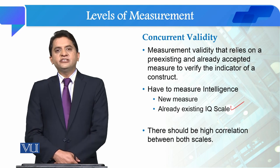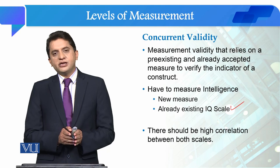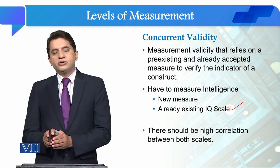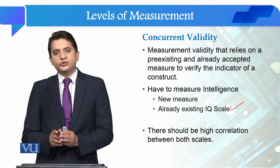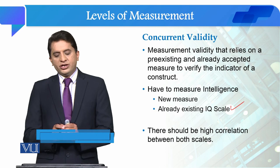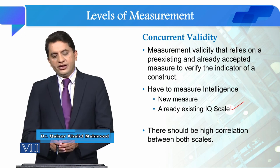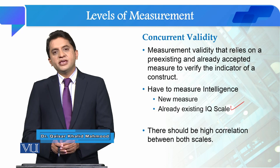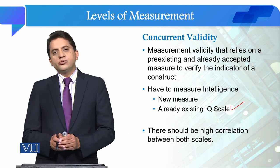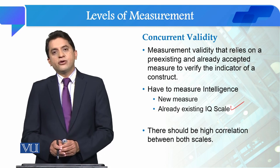How do we check concurrent validity? We look at the new scale and the conventional scale — an already developed traditional scale. We collect data and compare the two scales. If there is a high correlation between the new scale and the traditional scale, then we conclude that concurrent validity is high.